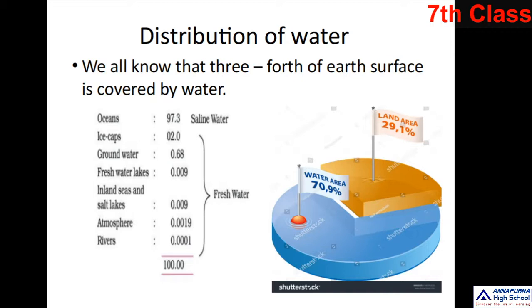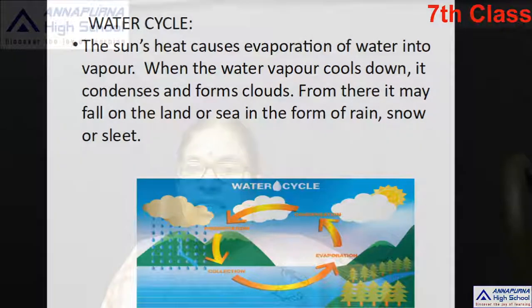Water is absolutely essential for our survival — it can quench our thirst when we are thirsty. If you are wasting this water, how can you live in your future? That is the big question. In this video I explained the water cycle and the distribution of water. In the next lesson, we will learn more about water. Thank you children, bye.